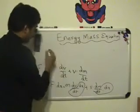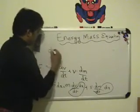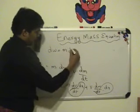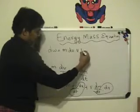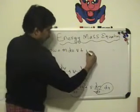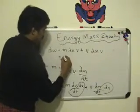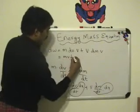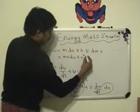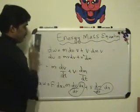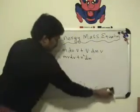So if you do that, then it becomes the work done is equal to m dv by v plus v dm into v. That's it. That is m v dv plus v square dm. That's dw, right?